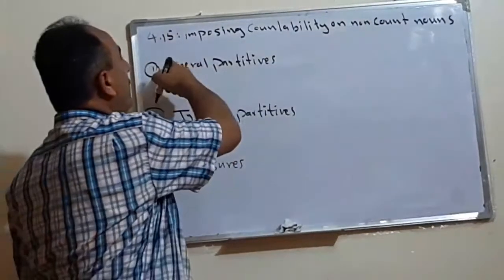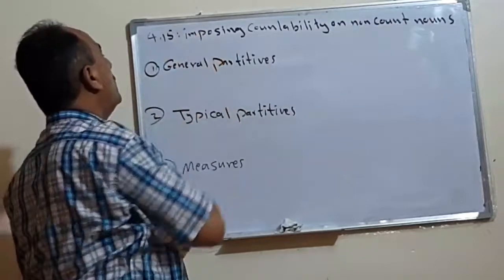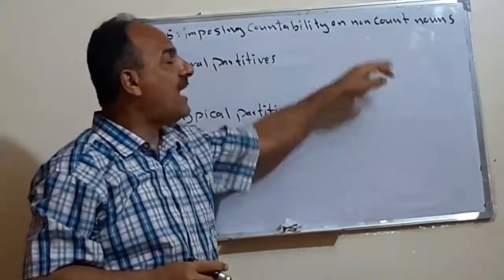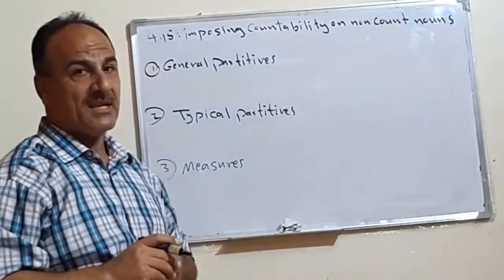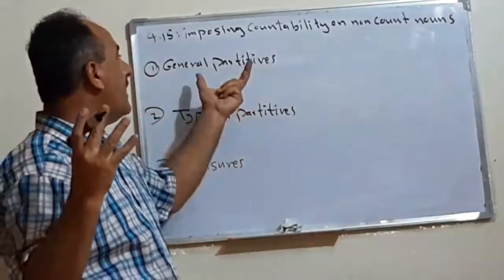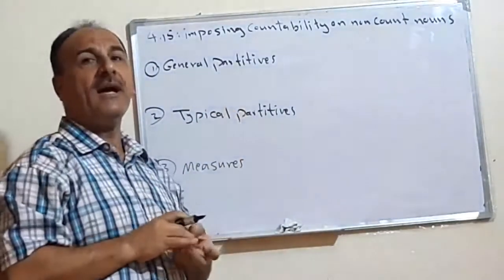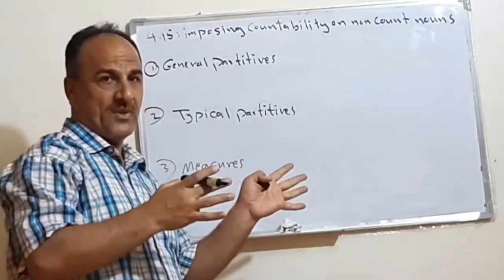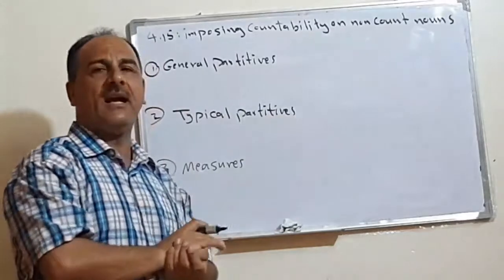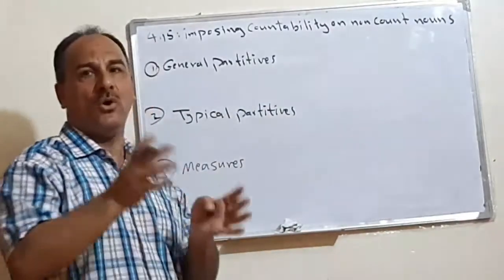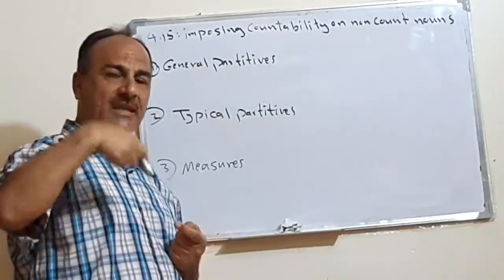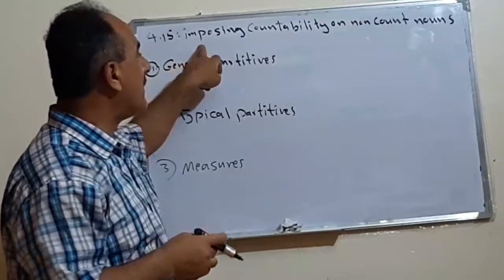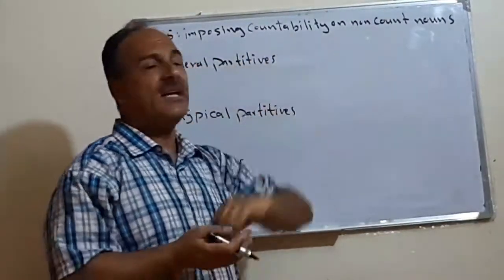Okay, in 4.15 we have what we call imposing countability on non-count nouns. What does this mean? It means if we have non-count nouns and we want to make it a group, so we divide this non-count nouns into pieces or parts, then we make these parts as plural. That means imposing countability on non-count nouns.